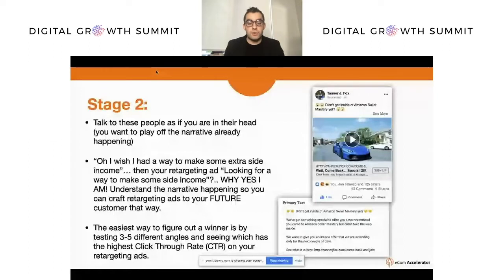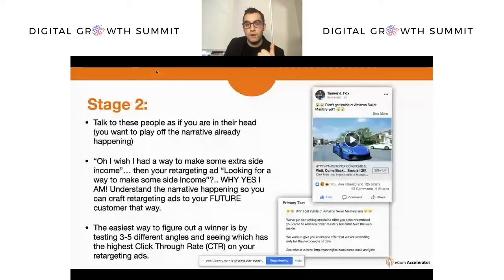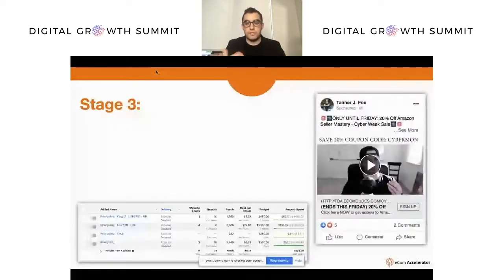The easiest way to find a winner is by testing three to five different angles — this is so important when it comes to running ads successfully. There are two things: the angle of the actual ad and click-through rate. If your angle is bad, you're going to get no traction, which leads to a low CTR, which leads to a high CPM.